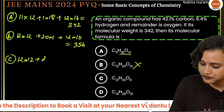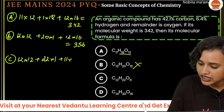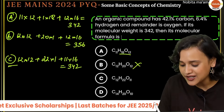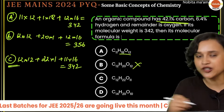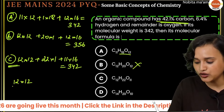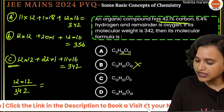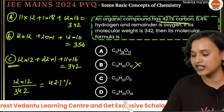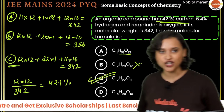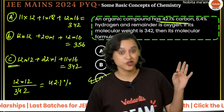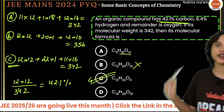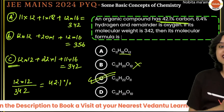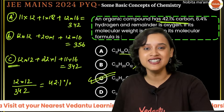Option C: C₁₂H₂₂O₁₁. Check: (12×12) + (22×1) + (11×16) = 144 + 22 + 176 = 342. ✓ Now verify carbon percentage: (12×12)/342 = 144/342 = 42.1%. This matches! Option C — C₁₂H₂₂O₁₁ — is the correct answer.